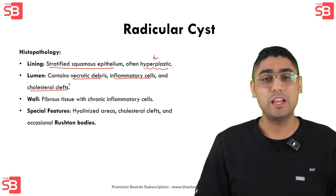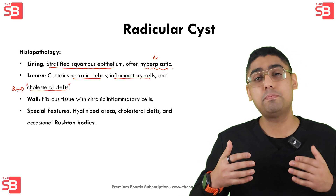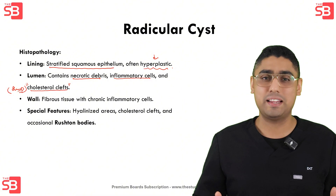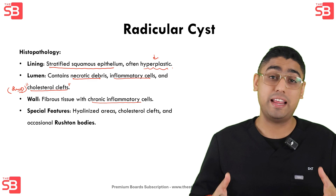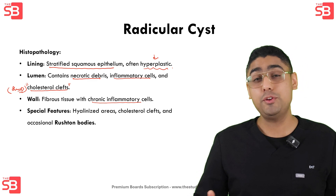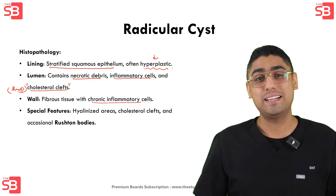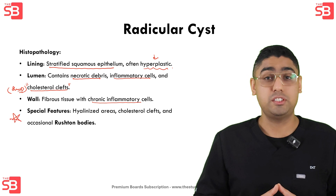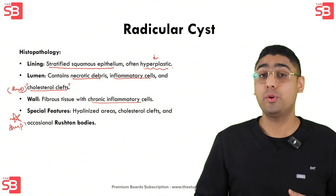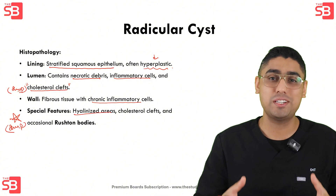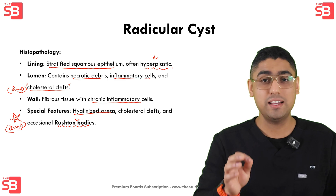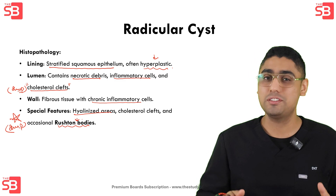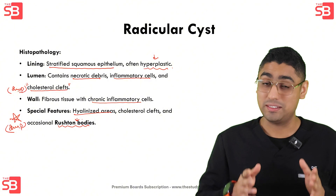Cholesterol clefts are an exam question. Moving to the cyst wall, it is primarily fibrous tissue with chronic inflammatory cells like lymphocytes and plasma cells. If there is an active infection, you might even see neutrophils mixed in. And lastly, there are special features you might encounter such as hyalinized areas and occasionally structures known as Rushton bodies — exam question again. These are unique hyaline formations that can help confirm the diagnosis of a radicular cyst.